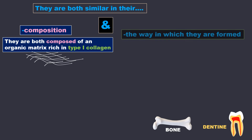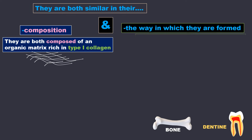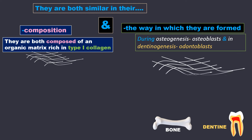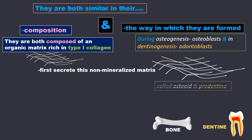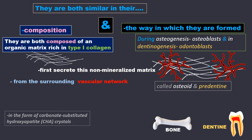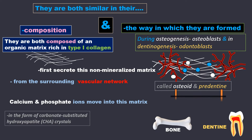During osteogenesis, osteoblasts, and during dentinogenesis, odontoblasts, first secrete a non-mineralized matrix. Then, from the surrounding vascular network, calcium and phosphate ions move into this matrix and mineralize it.